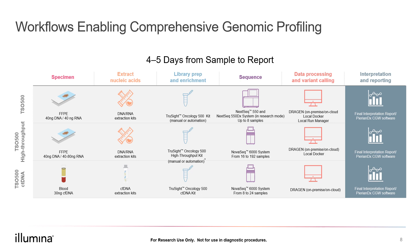After sequencing, variant analysis will need to be performed. Some of this will be predetermined with out-of-the-box kits, but users may choose to develop their own custom pipelines. Once you have a list of variants for each sample, those will need to be interrogated to determine which are relevant to the tumor type and which are determined to be variants of unknown significance, or VUSs.